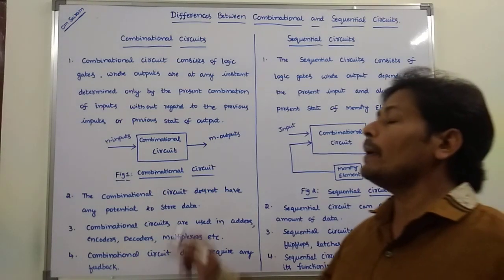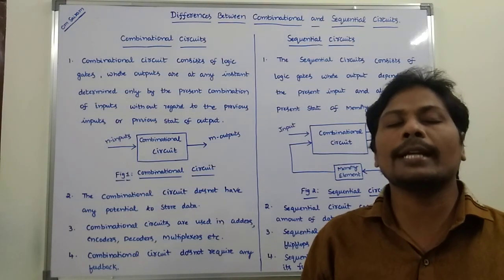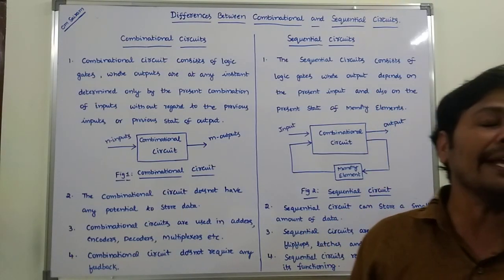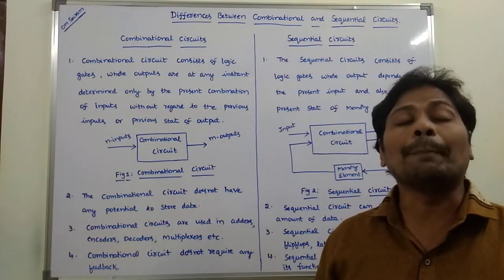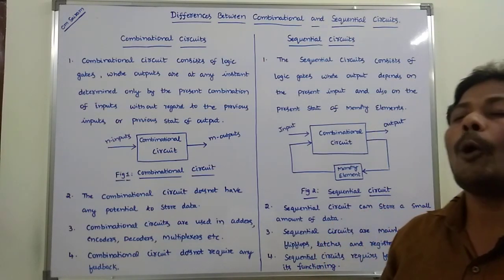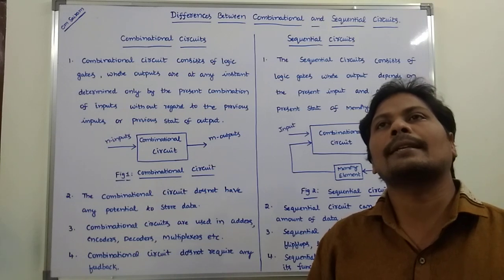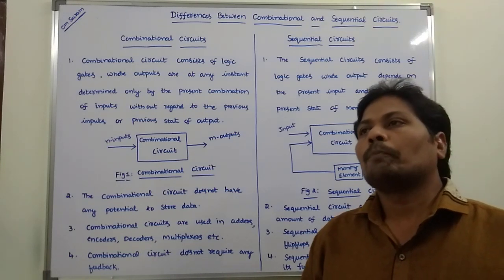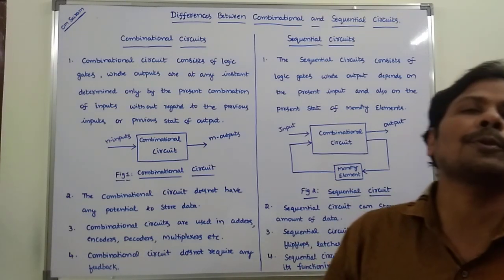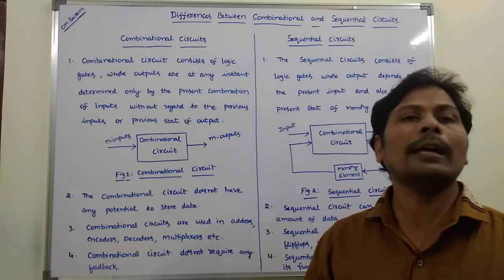Combinational circuits are mainly used in adders, decoders, multiplexers, encoders, and subtractors. Sequential circuits are mainly used in registers, latches, and flip-flops.